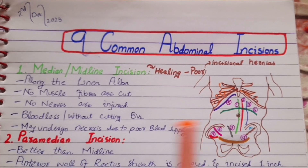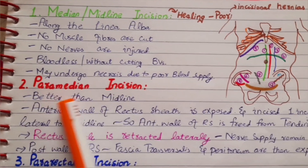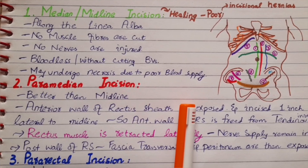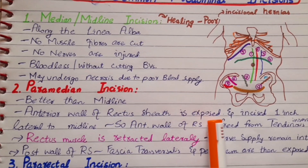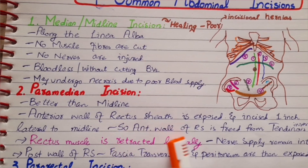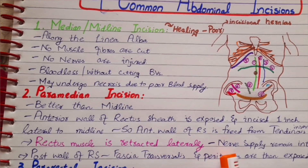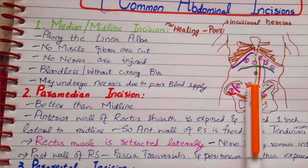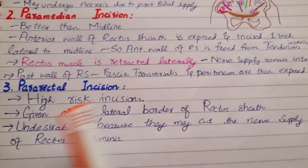The second type are the paramedian incisions, which are better than midline incisions. The anterior wall of the rectus sheath is exposed and incised about one inch lateral to the midline. It is firstly freed from the tendinous insertions of the rectus abdominis muscle, and the rectus muscle is retracted laterally so nerve supply remains intact. Then the posterior wall of the rectus sheath, fascia transversalis, and peritoneum are exposed. Median and paramedian incisions are mostly given for exploratory laparotomy.